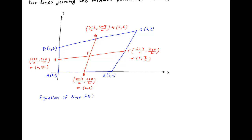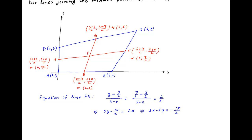Now the equation of line FH is: (y - 3/2) / (x - 0) = (7/2 - 3/2) / (5 - 0). The right-hand side simplifies to 2/5. Cross multiplying, we get 5y - 15/2 = 2x, which can be written as 2x - 5y = -15/2. Multiplying both sides by 2, we get 4x - 10y = -15.